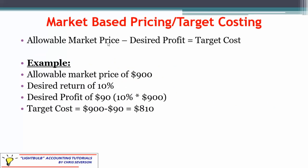Using target costing, we take the allowable market price, subtract out the desired profit, and that tells us what our target cost must be. For example, if the allowable market price is $900 and we want a desired return of 10% on that price, our desired profit is $90 (10% × $900). Subtracting $90 from $900 gives us a target cost of $810 — that's where we have to fall for this to work out.